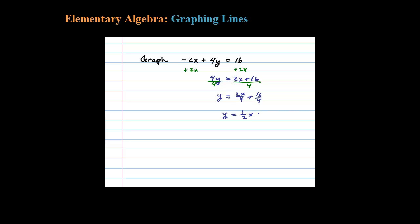Because just by looking at it we can tell our slope m equals 1/2, and that is the rise over the run.